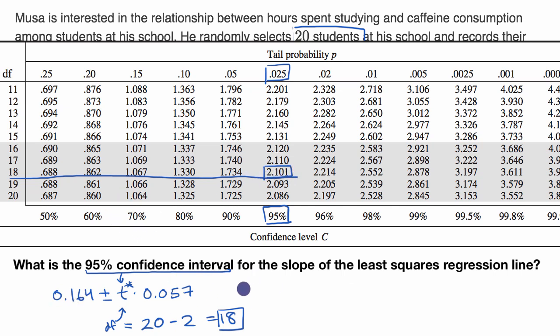And so our 95% confidence interval is going to be 0.164 plus or minus our critical t-value, 2.101, times the standard error of the statistic, 0.057. And you could type this into a calculator if you wanted to figure out the exact values here. But the way to interpret a 95% confidence interval is that 95% of the time that you calculate a 95% confidence interval, it is going to overlap with the true value of the parameter that we are estimating.